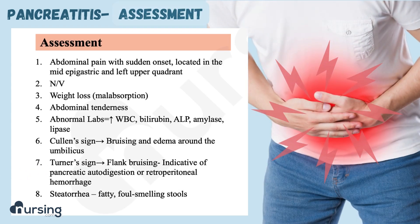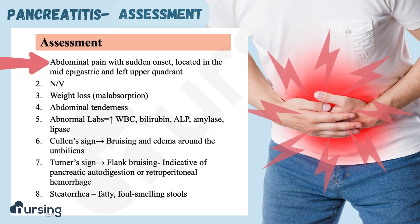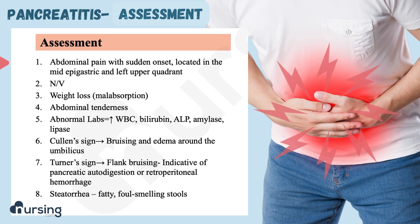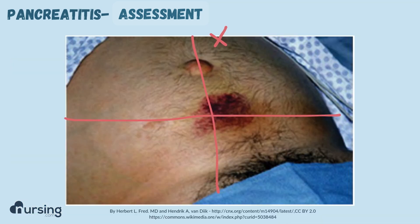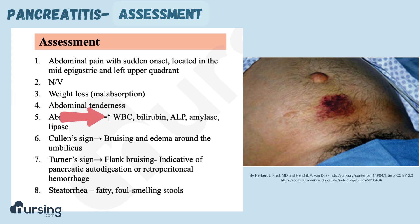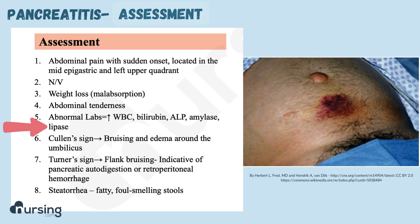The number one symptom of pancreatitis is severe abdominal pain — this is an extremely painful disease. The pain is usually mid-epigastric or left upper quadrant. They're also going to experience nausea, vomiting, and a lot of weight loss because of malabsorption. They'll also have an elevated white blood cell count, bilirubin, ALP, elevated amylase, and lipase because they aren't being used.